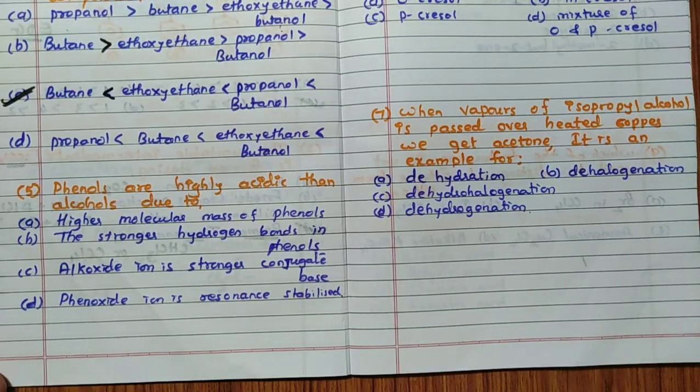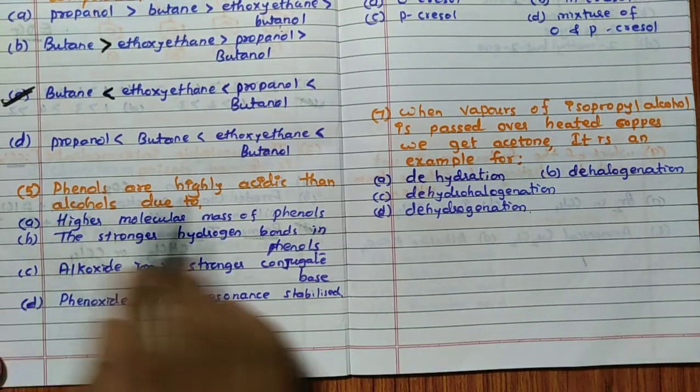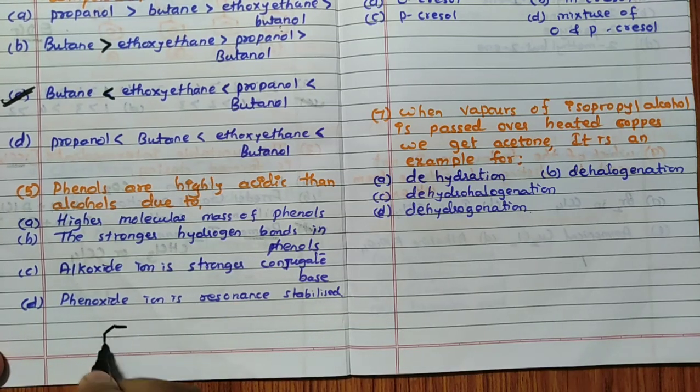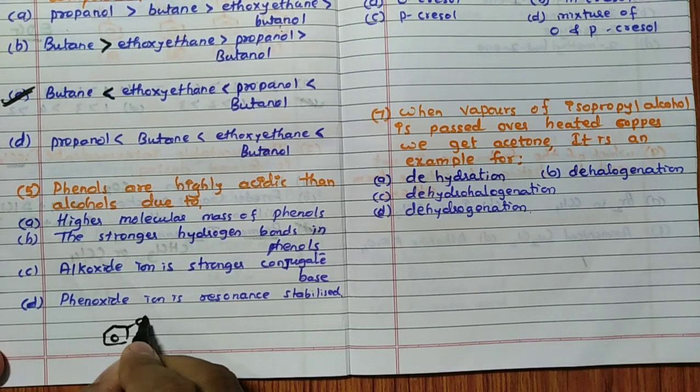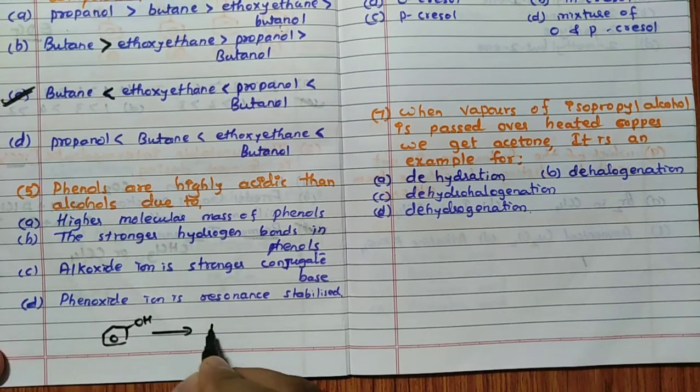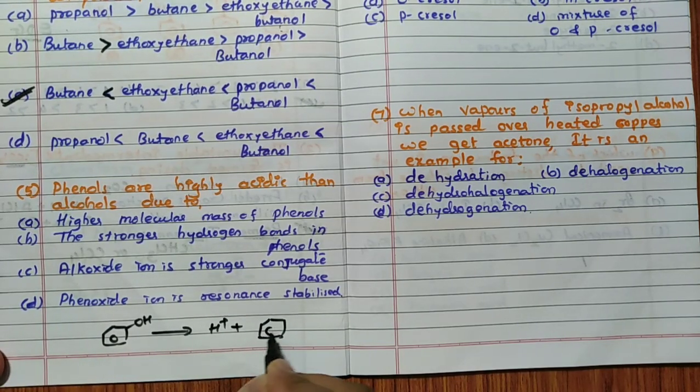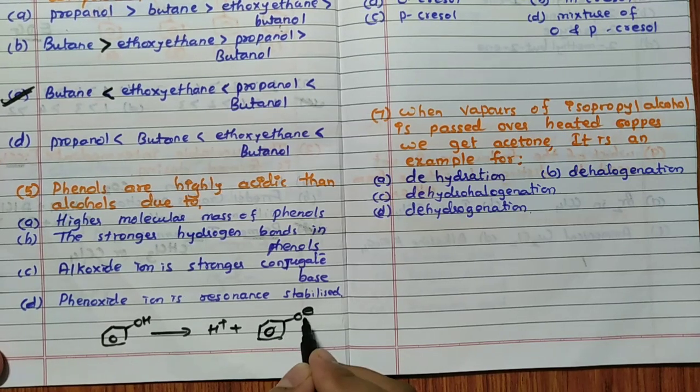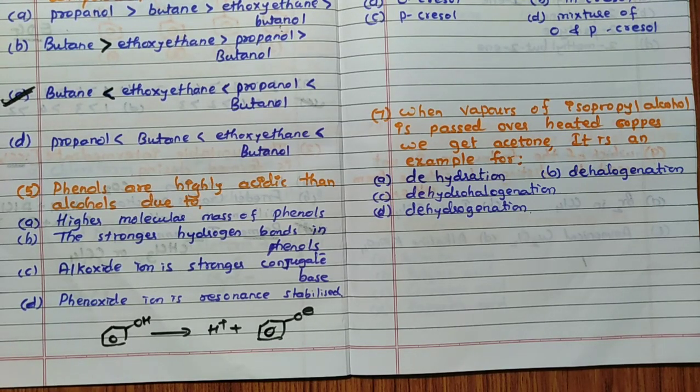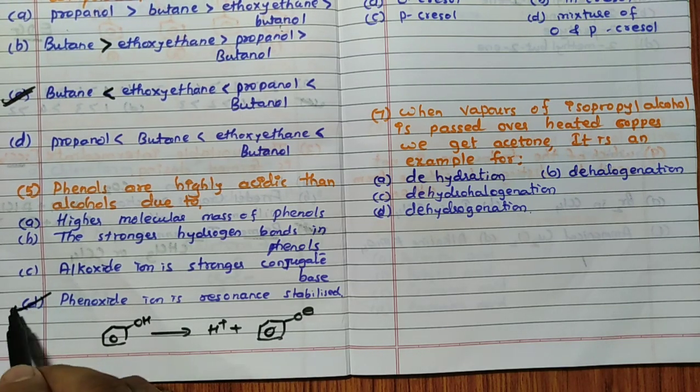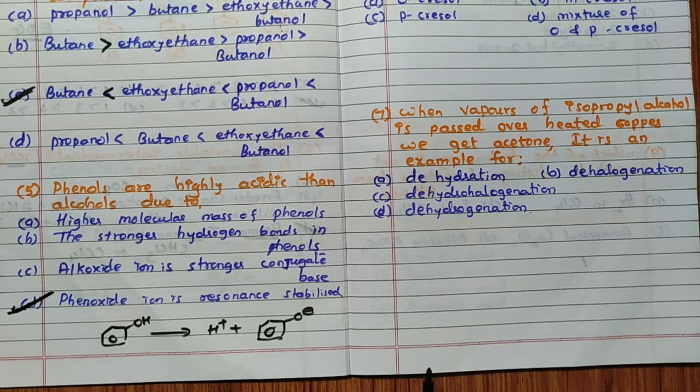Phenols are highly acidic than alcohols due to - remember phenols are acidic than alcohol we know that. Because whenever what happens, when phenol give H plus ion, it will form phenoxide ion. So phenoxide ion is more stable due to resonance. Because of that reason, phenoxide ion stability, phenol is more acidic. So the answer for this question is D, D is the answer.